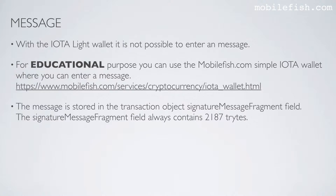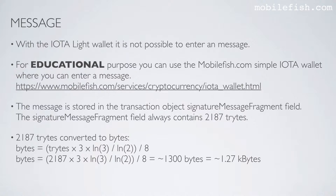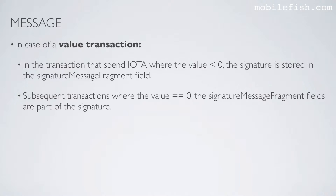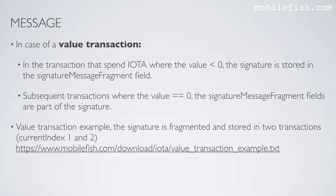The message is stored in the transaction object signature message fragment field. The signature message fragment field always contains 2,187 trits. 2,187 trits converted to bytes is approximately 1.27 kilobytes. In case of a value transaction — a transaction that spent IOTA where the value is smaller than 0 — the signature is stored in the signature message fragment field. Subsequent transactions where the value is equal to 0, the signature message fragment fields are part of the signature. Here is a value transaction example where the signature is fragmented and stored in two transactions at current index 1 and 2.